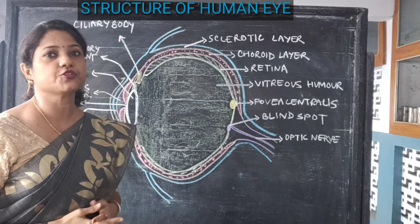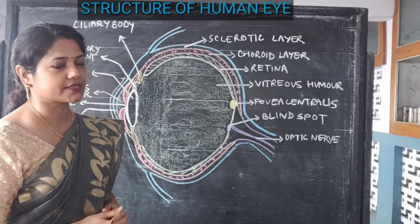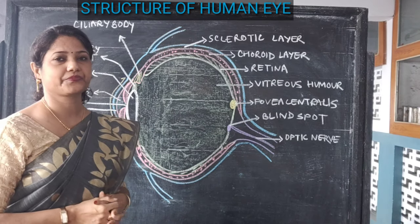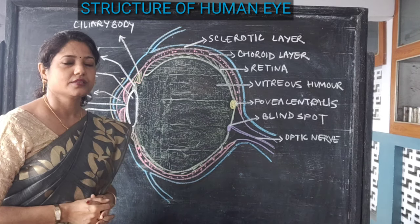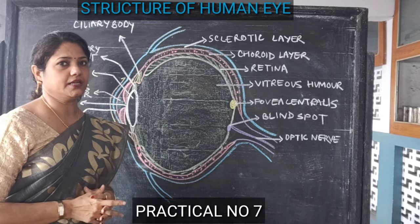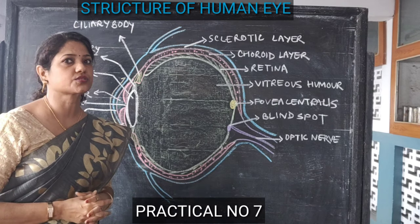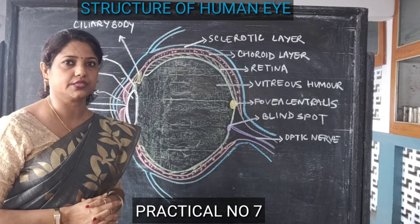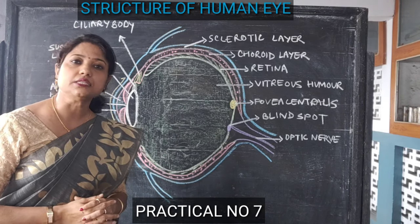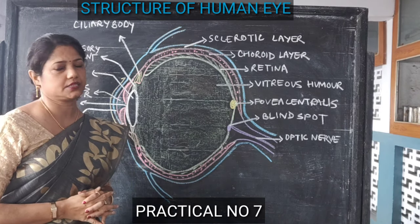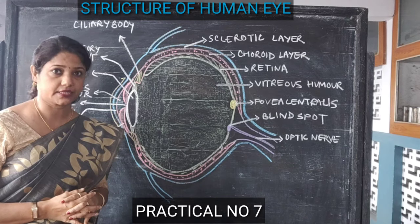The eyeball is divided into three parts. First, the outermost part is called the sclera. The second part, the middle part, is called the choroid. And the innermost part is called the retina.